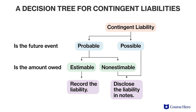The last type of contingent liabilities is a remote liability. Unlike probable and possible liabilities, a remote contingent liability has very little or no likelihood of becoming an actual liability. For example, in a lawsuit, J Company's legal counsel determines that the case against the company lacks evidence and is without merit, and there is little chance J Company will lose the case.